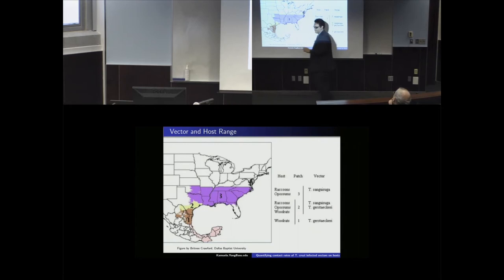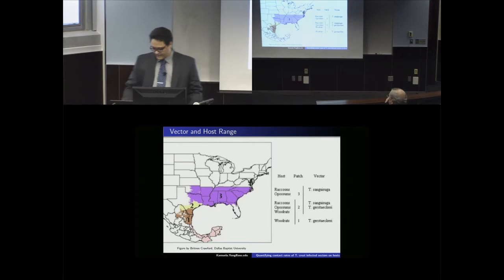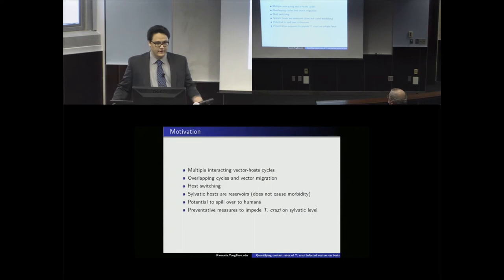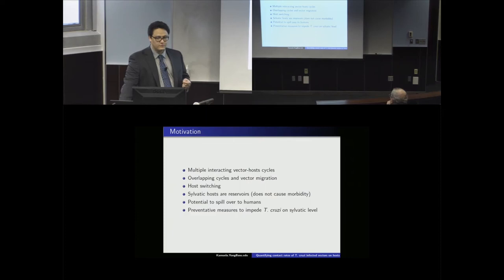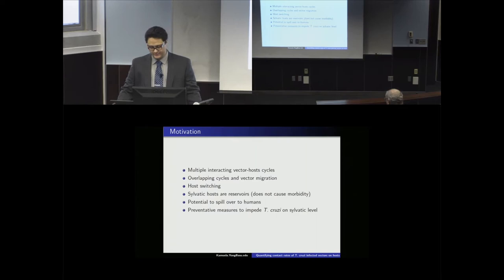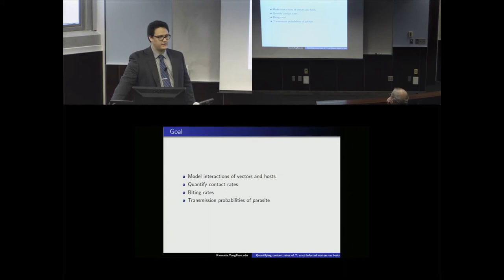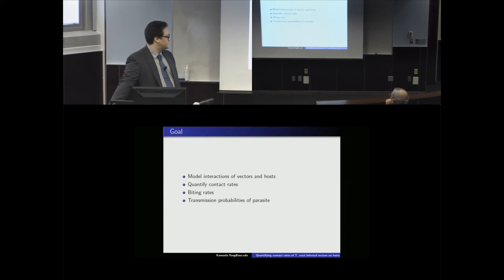Once a raccoon is infected, it can spread the disease throughout the US southeast — that's a very high potential for an outbreak. We're examining these multiple interacting vector-host cycles and migration patterns, focusing on region 2, the overlapping area. The sylvatic hosts are reservoirs: they are not themselves affected by T. cruzi, but allow the parasite to persist and create potential for spillover to humans. Our goal is to model the vector-host interactions and quantify contact rates to estimate biting rates and transmission.